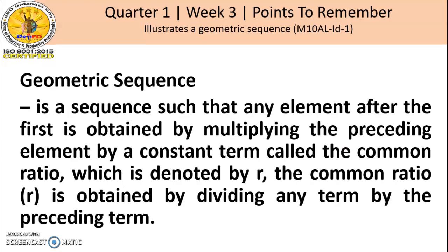Let's proceed to our lesson. Definition of geometric sequence: a geometric sequence is a sequence such that any element after the first is obtained by multiplying the preceding element by a constant term called the common ratio, which is denoted by R. The common ratio R is obtained by dividing any term by the preceding term.